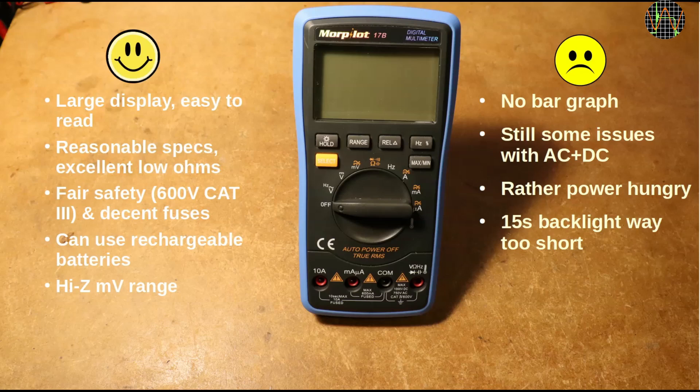I like the Morpilot 17B. It is a good budget meter with more features than the Grenova. If physical size is not an issue, I would actually recommend the Morpilot 17B over the Grenova.